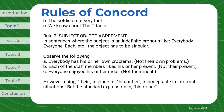Rule 2: Subject-Object agreement. In sentences where the subject is an indefinite pronoun like 'everybody,' 'everyone,' 'each,' etc., the object has to be singular. Observe the following: 'Everybody has his or her own problems' — not 'their own problems.' 'Each of the staff members liked his or her present' — not 'their present.' 'Everyone enjoyed his or her meal' — not 'their meal.' However, using 'their' in place of 'his or her' is acceptable in informal situations, but the standard expression is 'his or her.'